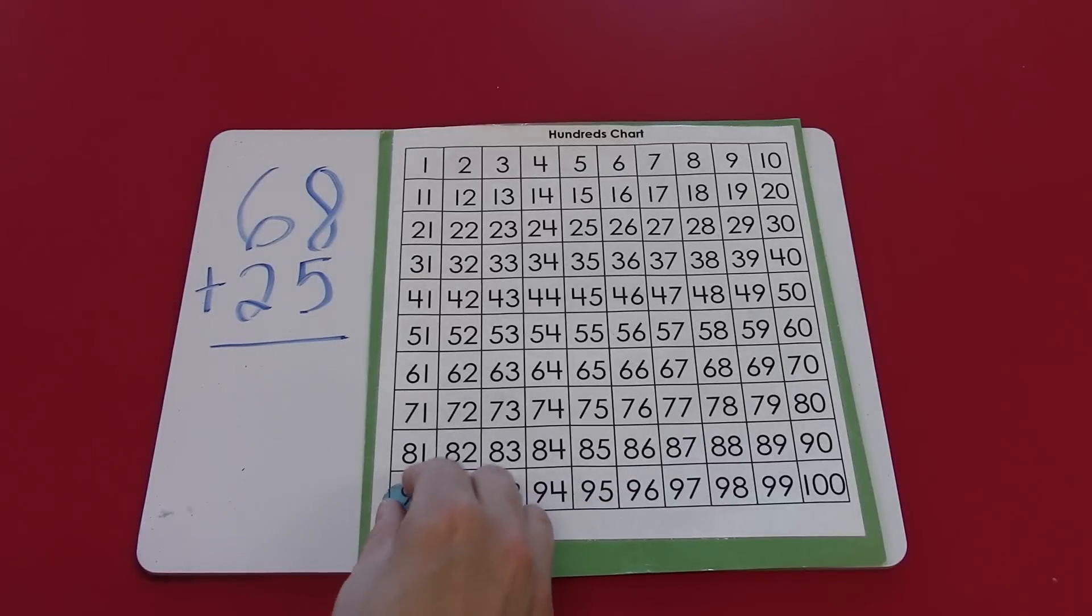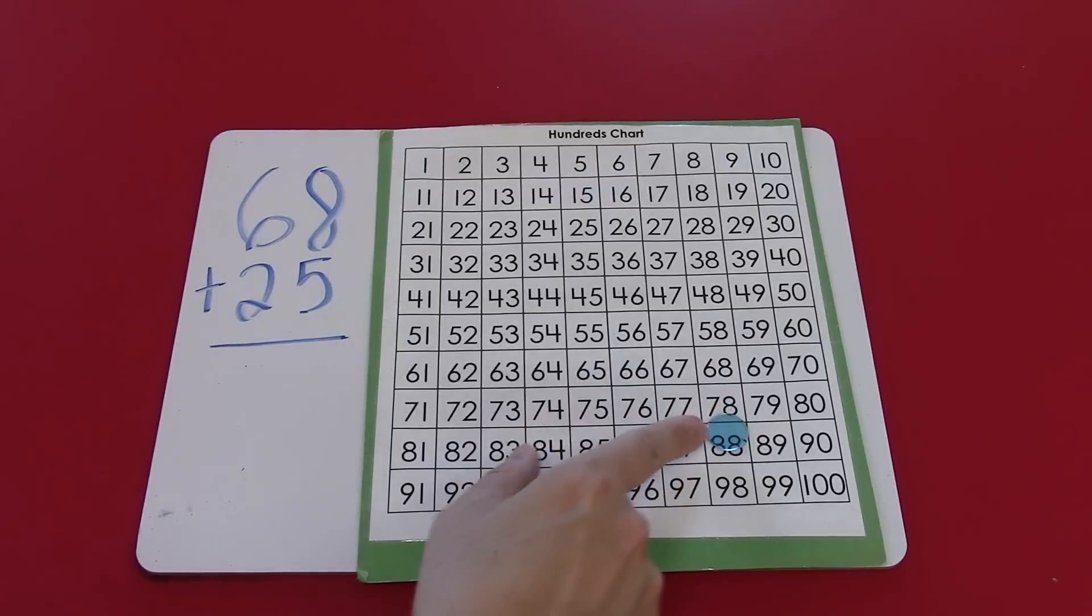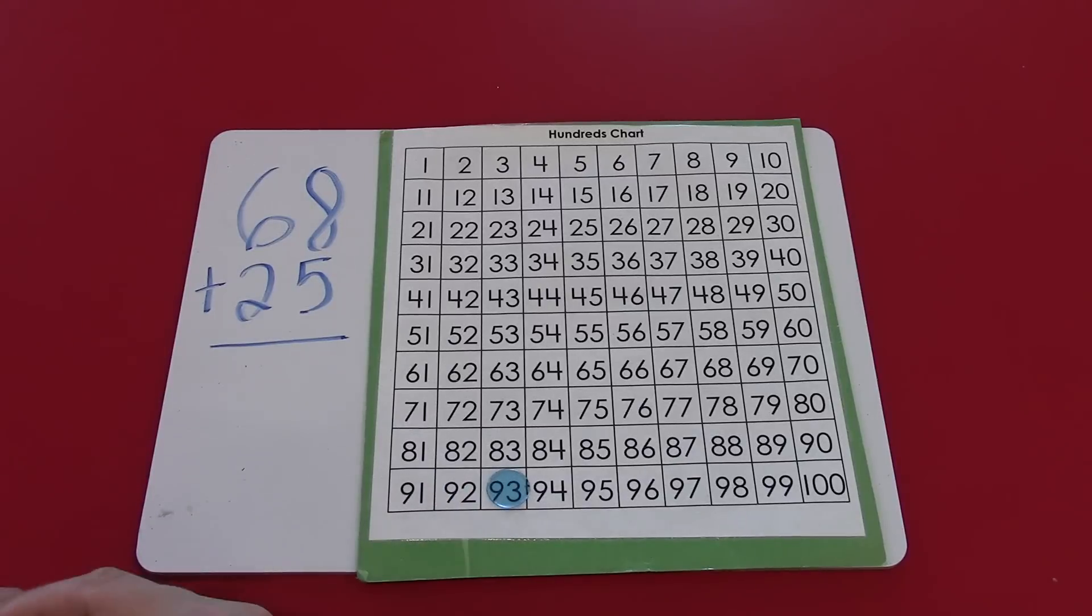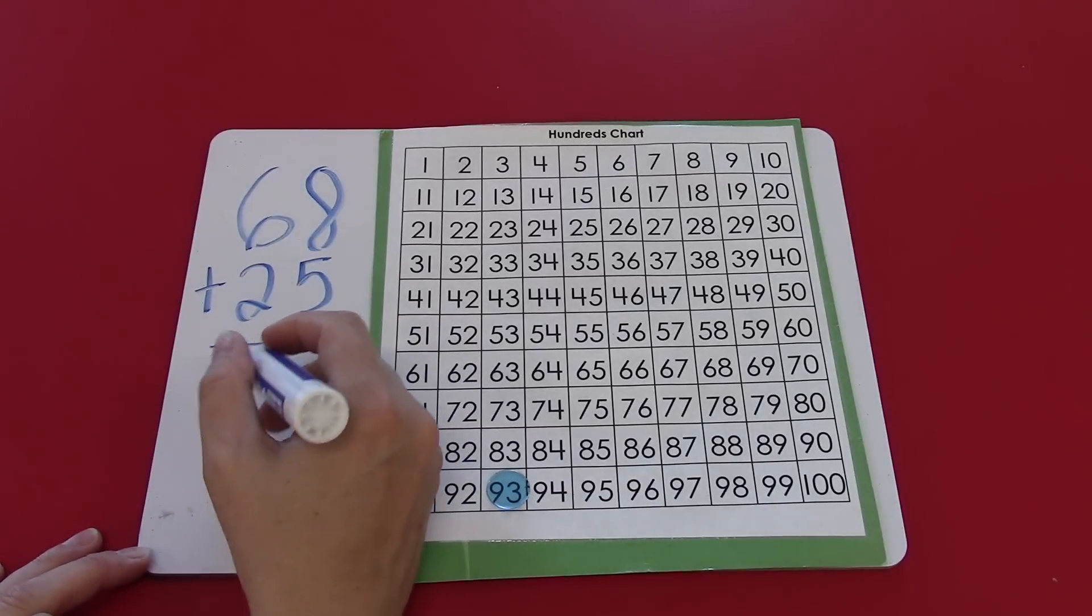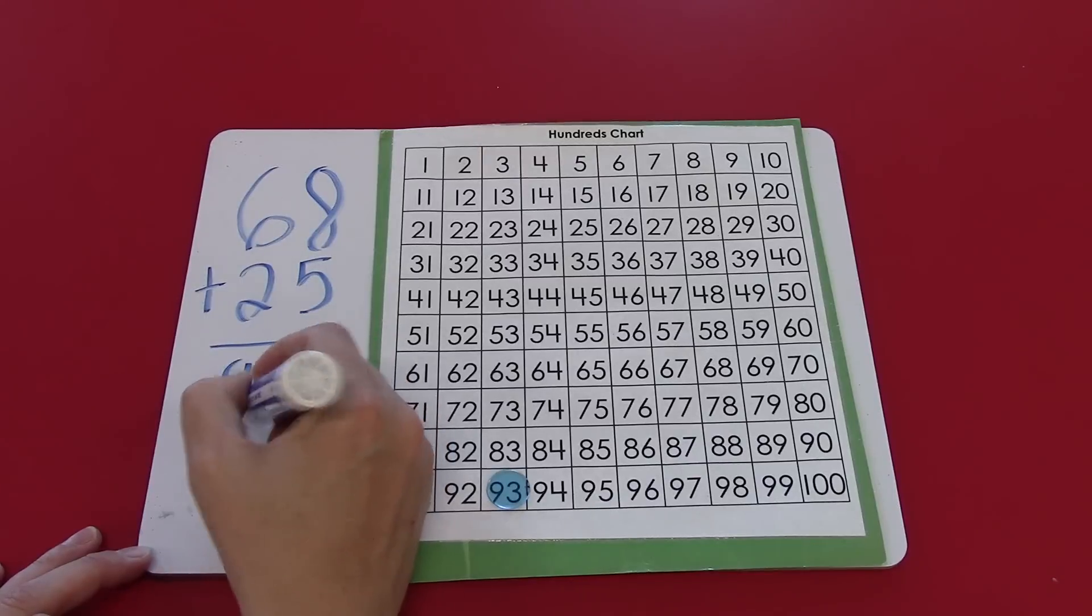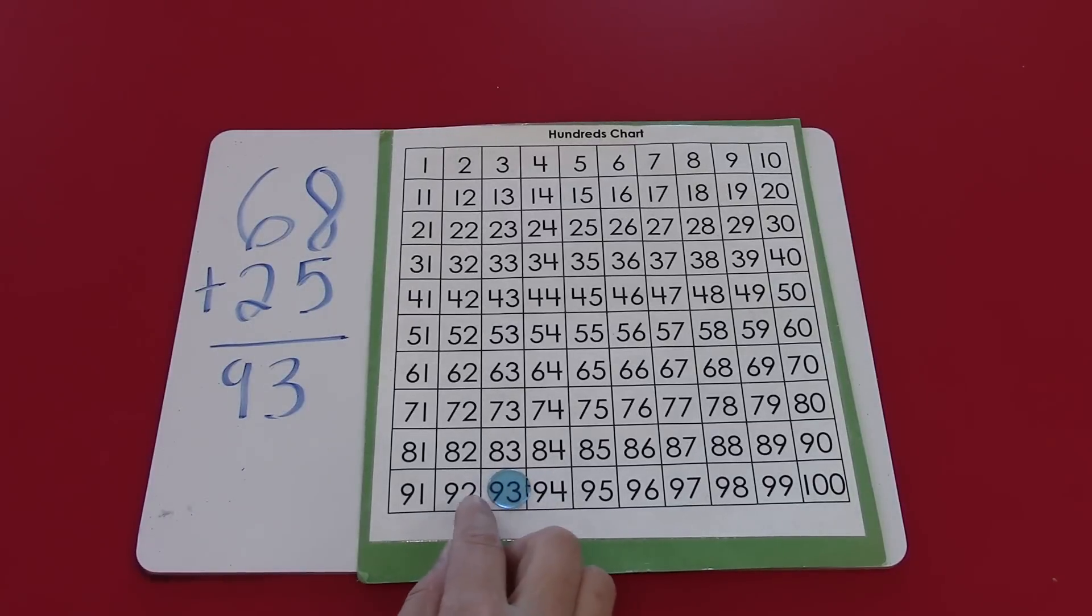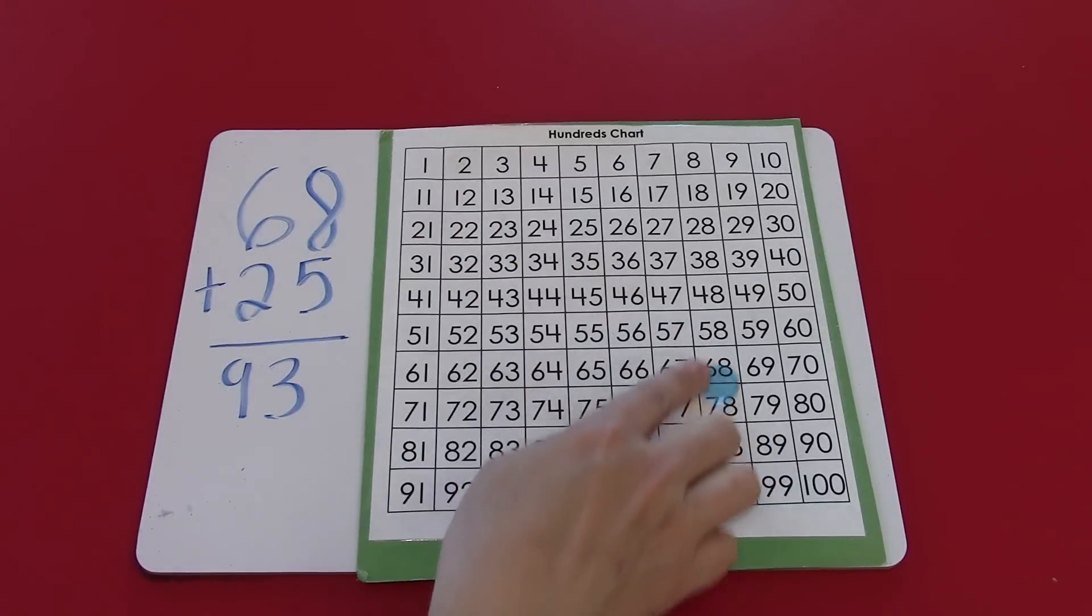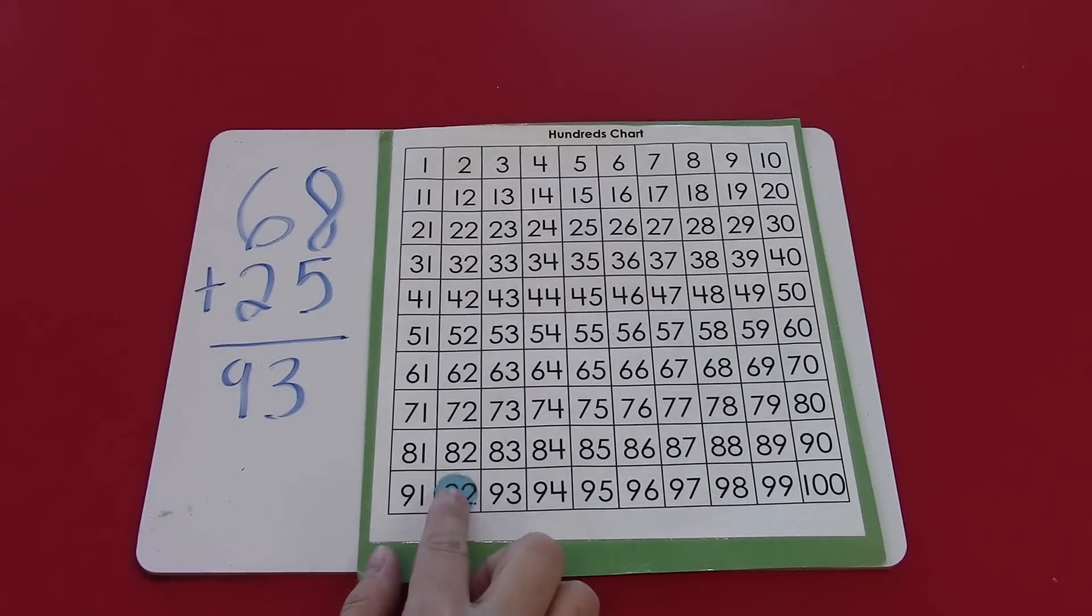Ten, twenty, 21, 22, 23, 24, 25. 68 plus 25 is 93. If you ever lose track of your counting it's always a good idea to double check your answer. So I'm going to do that since I had to stop a few times. Start at 68. Yep. 10, 20, 21, 22, 23, 24, 25.